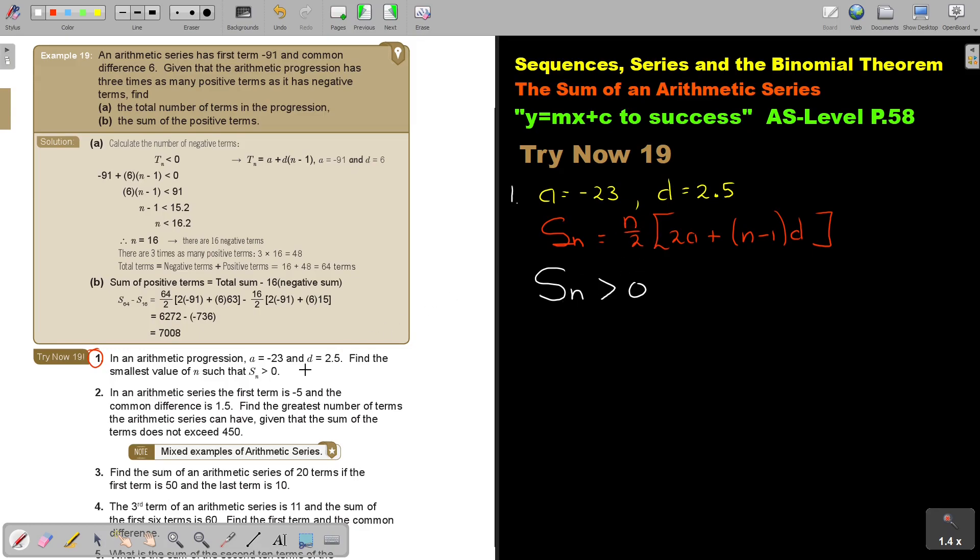SN is bigger than 0, so I fill it in. In the place of N, find the smallest value of N. I don't know N, so N over 2, but I know A, and that's negative 23. I don't know N, but I know D, and that's 2.5.